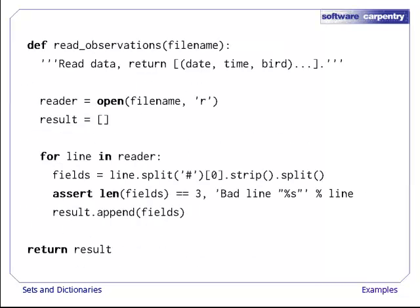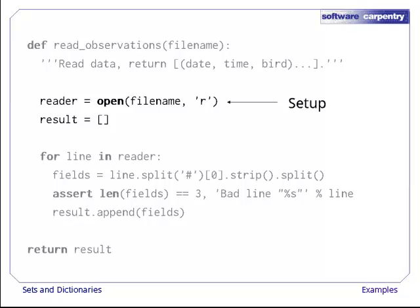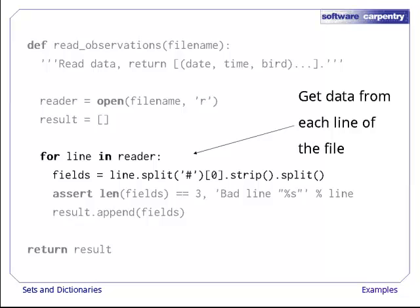First, though, let's read our data file and create a list of tuples, where each tuple has the date and time as strings and the bird name. Our function follows the pattern we've seen many times before. We set up by opening the input file and creating an empty list that we'll append records to. We then process each line of the file in turn. Splitting the line on the hash character and taking the first part of the result gets rid of any comment that might be present. Stripping off white space and then splitting breaks the remainder into fields.